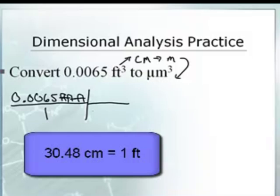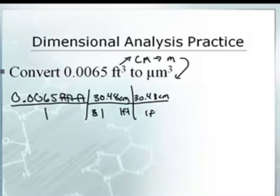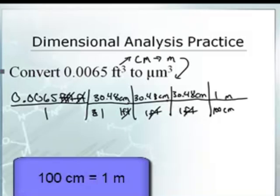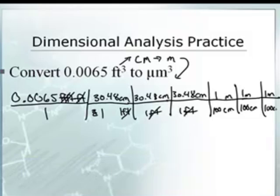One foot is 30.48 centimeters. I've got to do this three times: 30.48 centimeters in one foot, 30.48 centimeters in one foot, 30.48 centimeters in one foot. So my feet cancel and now we're in centimeter, centimeter, centimeter. Now I'm going to do centimeters to meters. There are a hundred centimeters in one meter. You've got to know what centi means — centi means one hundred, like cents. There are a hundred cents in a dollar. So one hundred centimeters in one meter, and my centimeters cancel.